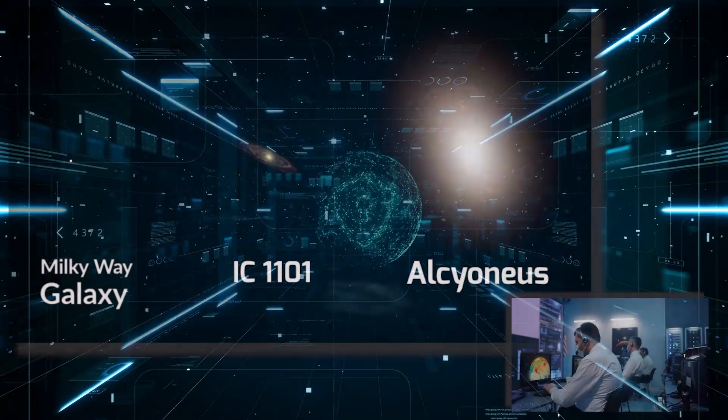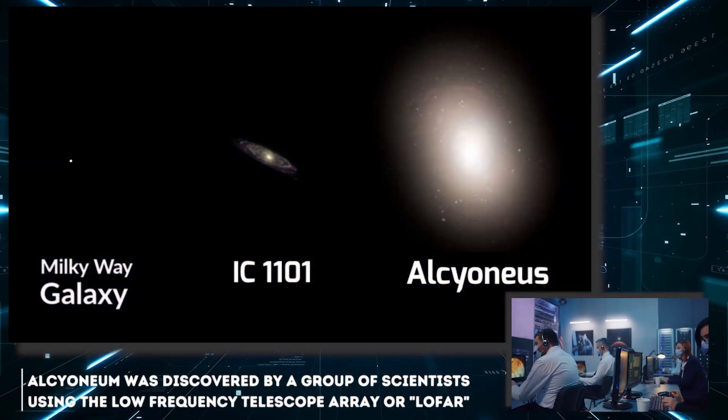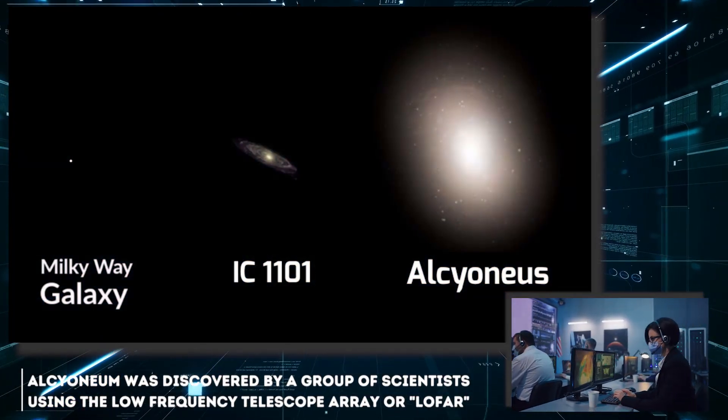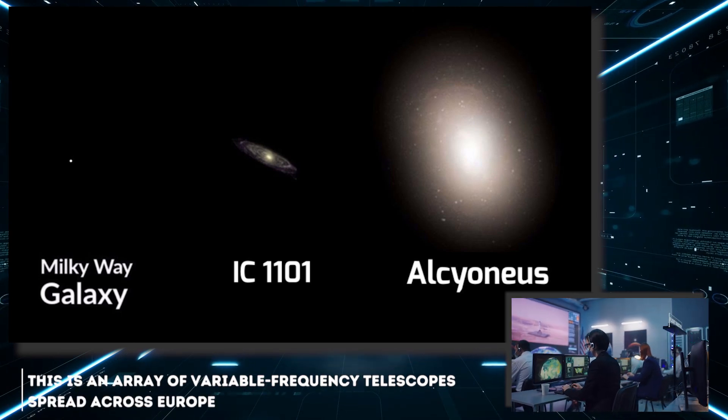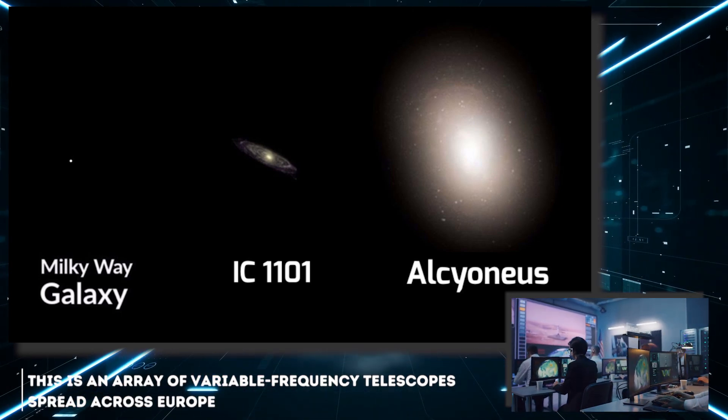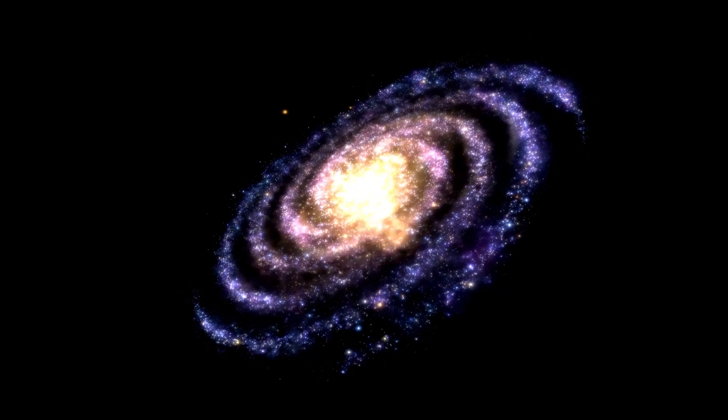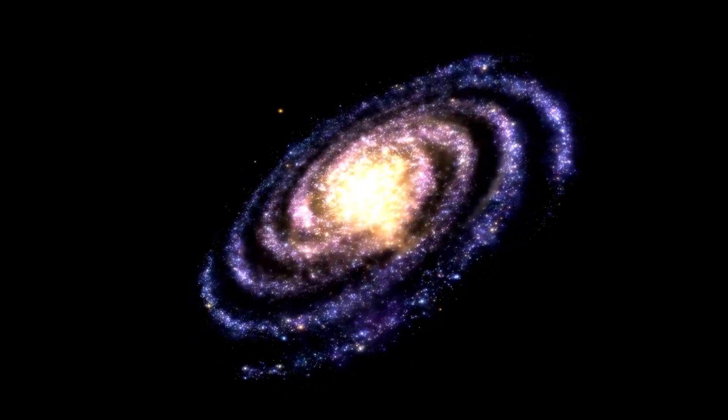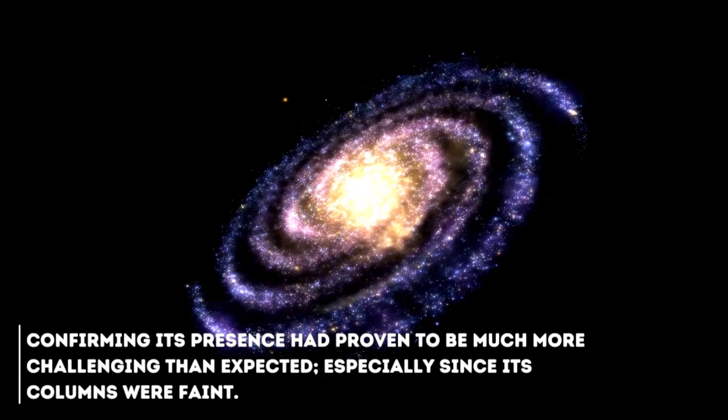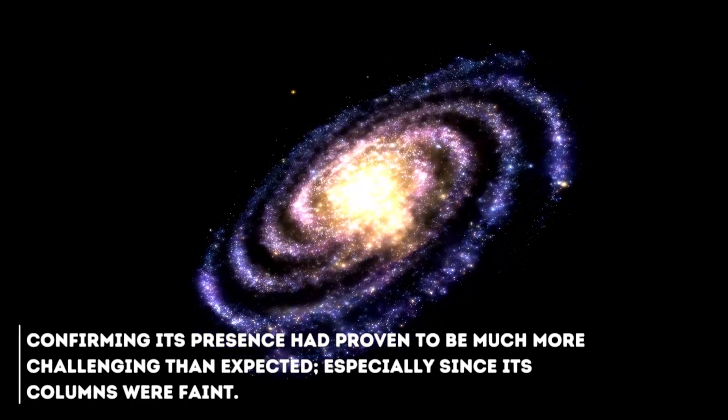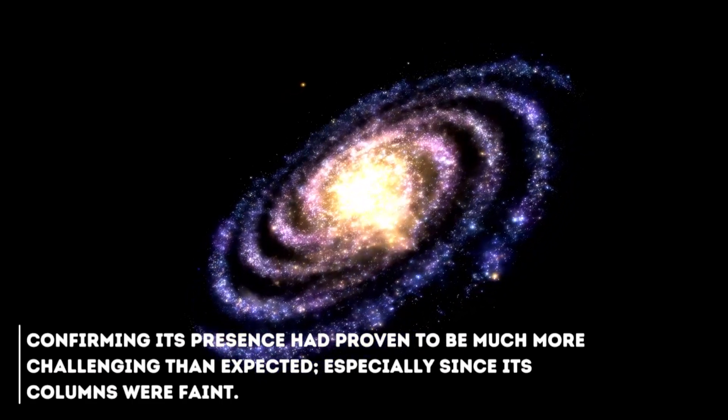At the time, Alcinium was discovered by a group of scientists using the Low Frequency Telescope Array, or LOFAR. This is an array of variable frequency telescopes spread across Europe. Although the existence of Alcinium had been suspected for some time, confirming its presence had proven to be much more challenging than expected, especially since its columns were faint.